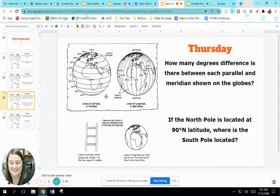Guys, it's 15 degrees difference. Put that in a complete sentence. The north pole is located at 90 degrees north latitude. Where do you think the south pole is located? Make an educated guess. If it's 90 degrees north for the north pole, what's it going to be down here for the south pole?